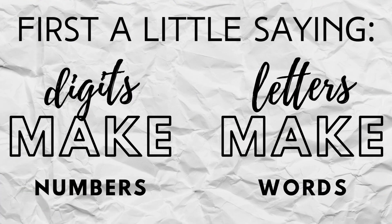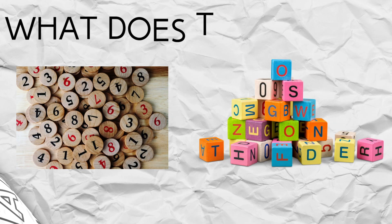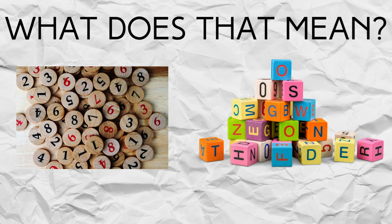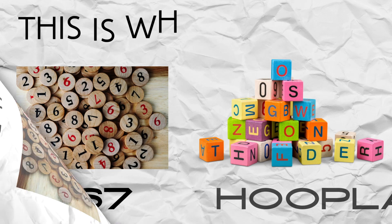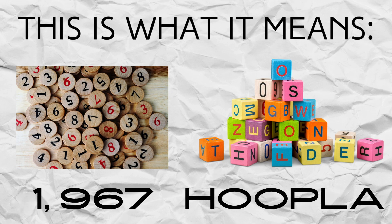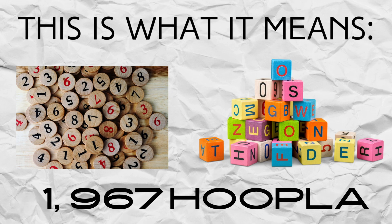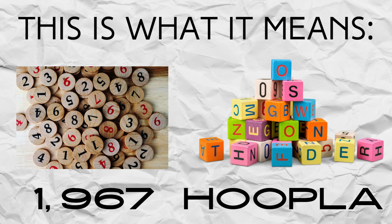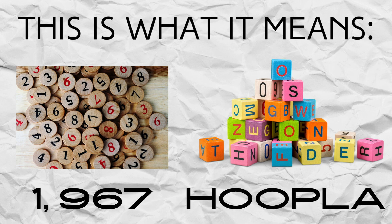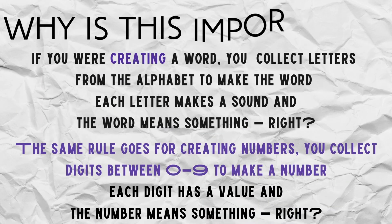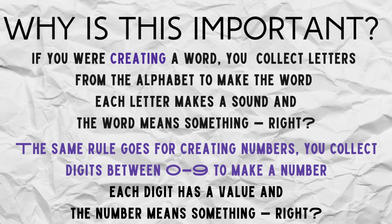My friend taught me this: digits make numbers like letters make words. To make a number, you have a bunch of digits to pick from, just like with a word you have a bunch of letters to pick from. To make the number one thousand nine hundred sixty-seven, I had to choose those digits, just like the word 'hoopla' — I had to choose those letters. Each digit has a value and it means something when you put them all together.